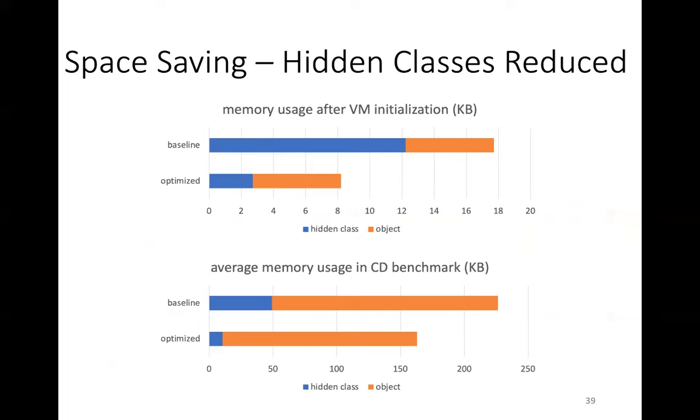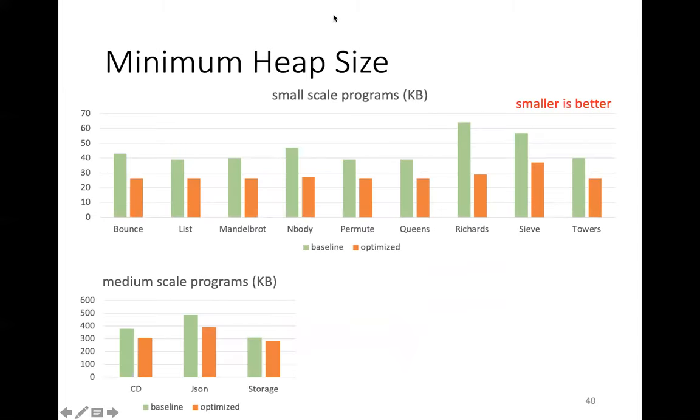Next, this chart shows how memory usage due to hidden classes is reduced. For example, after VM initialization, only 3KB is used for hidden classes. For the execution of the collision detector benchmark, only about 10KB of the memory is used for hidden classes. This chart shows the minimum heap sizes to execute programs. Again, orange bars are for the optimized VM. They are reduced substantially.